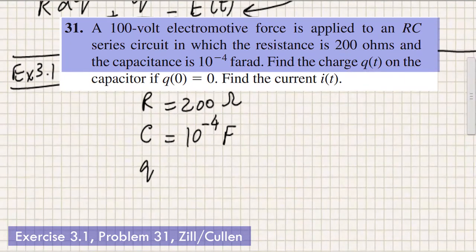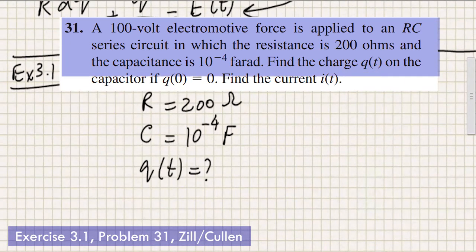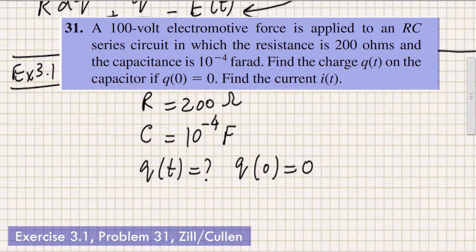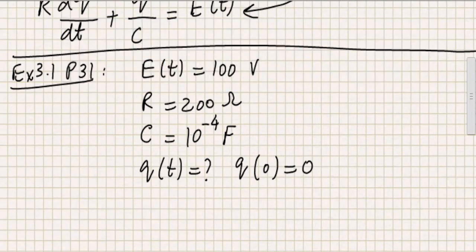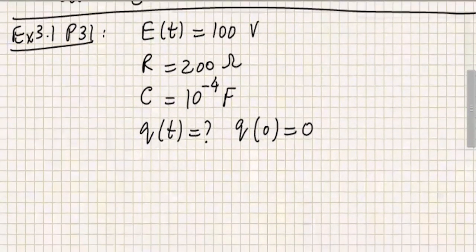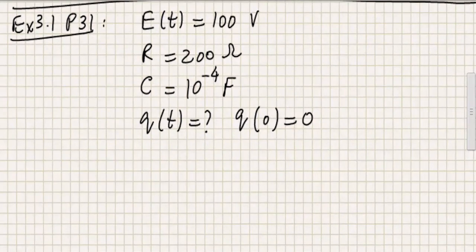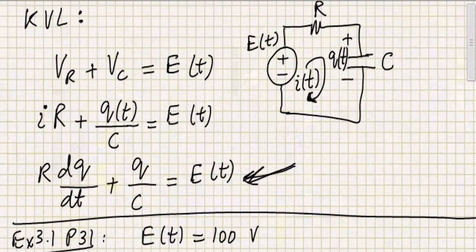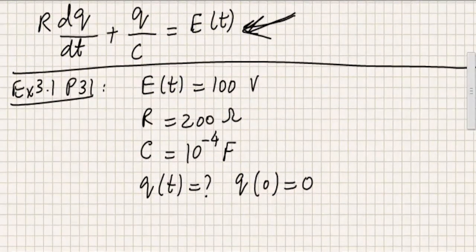in which the resistance is 200 Ohms and the capacitance is 10 raised to the power minus 4 farads. So the question is, find Q of T, the equation for Q of T, if the initial value of charge was 0, the initial charge on the capacitor was 0. So let's do only this part of the problem, so what I can do is, I can use this differential equation,